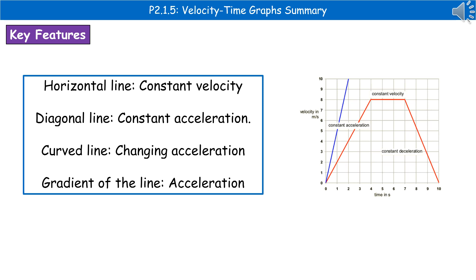A diagonal line means constant acceleration, a curved line is changing acceleration, and the gradient gives us the acceleration of the object.